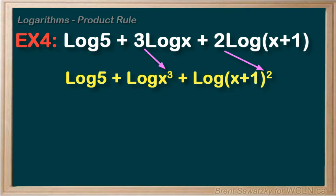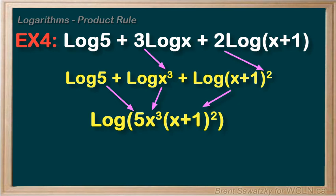And now, going from additions to multiplications per the product rule, kind of backwards, we'd make this one big resulting log.